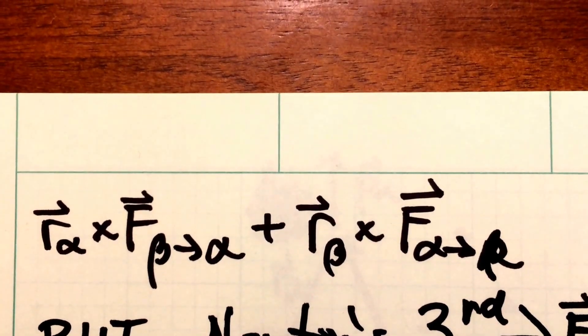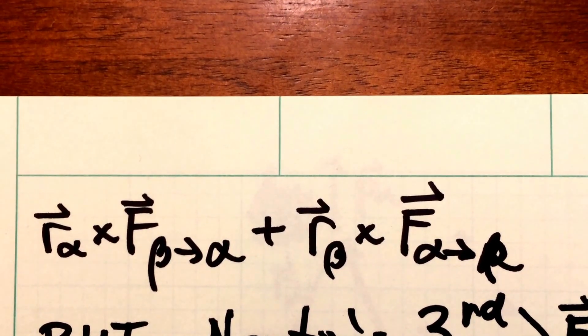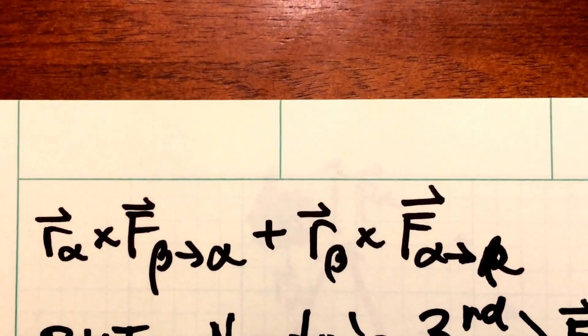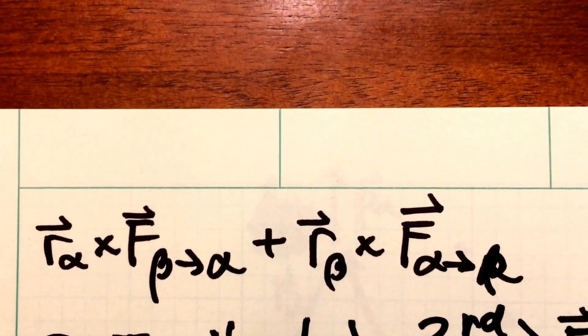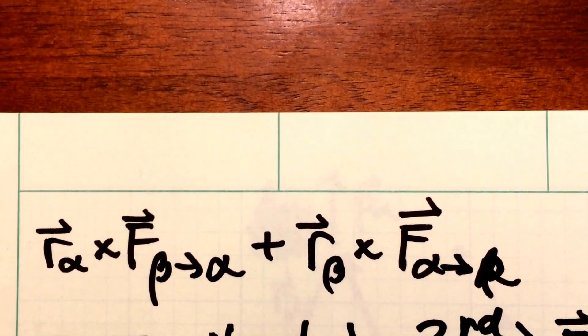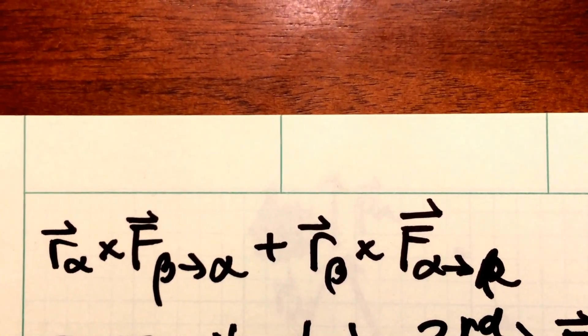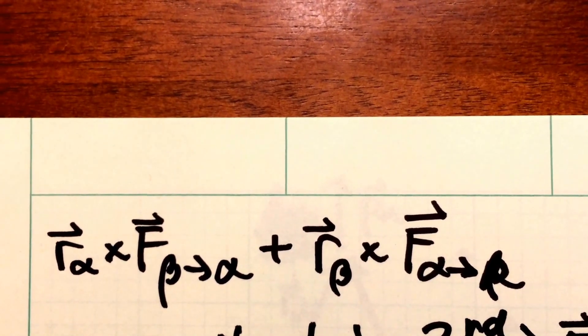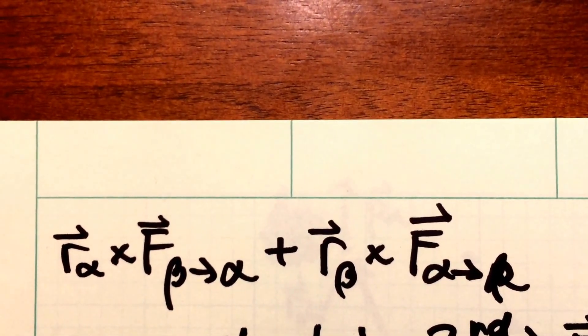And so let's look at how we can write the sum of these two terms. So remember the term on the left, that's the torque resulting from particle beta's force on particle alpha. And then the term on the right, that's the torque resulting from particle alpha's force on particle beta.